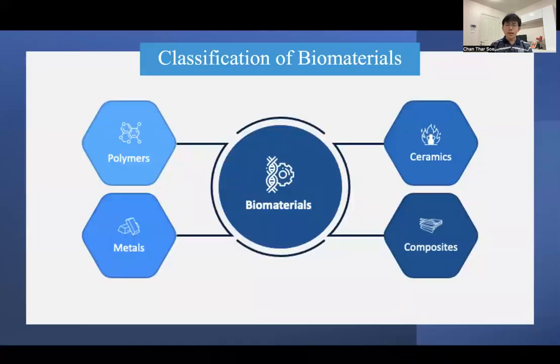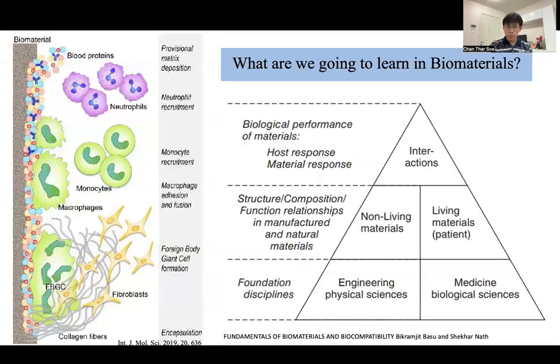For the classification of biomaterials, as mentioned earlier, it could be polymer, metal, ceramics, and composites. So let's look at each one closely.